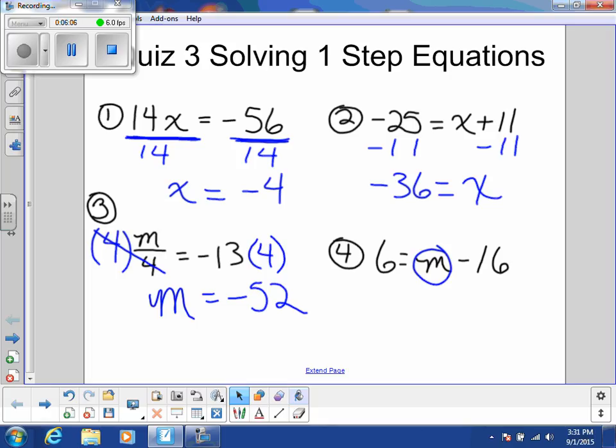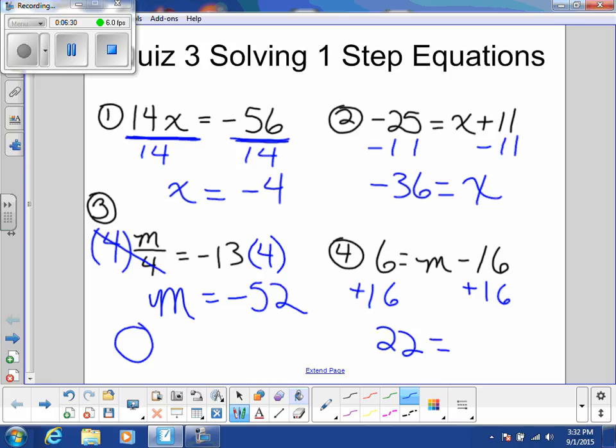All right, equation number 4 looks like this. M is on the right, what's happening to M? M has 16 being taken away from it. The inverse of subtracting 16 is to add 16. So I'll add 16 to both sides. And now M stands alone. 22 equals M, solution to the equation.